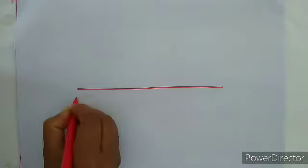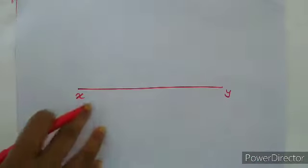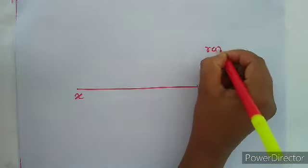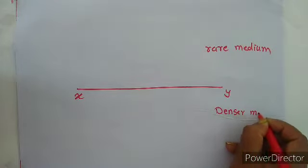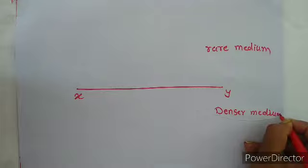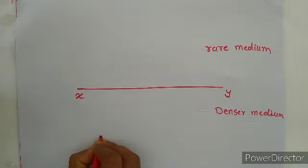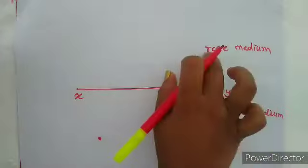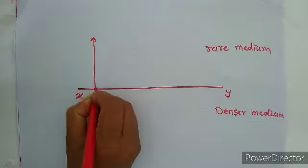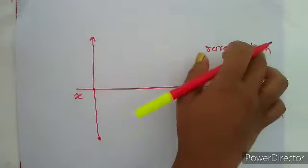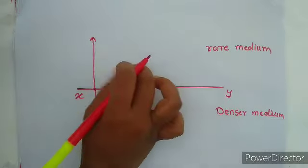Let us consider this is the XY plane. This is the rare medium and this is the dense medium. When light rays travel from denser medium to rare medium, they get bent and move away from the normal.